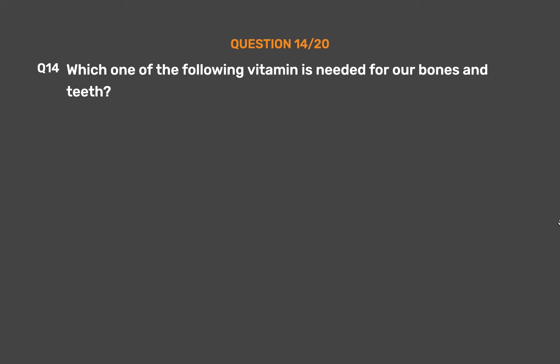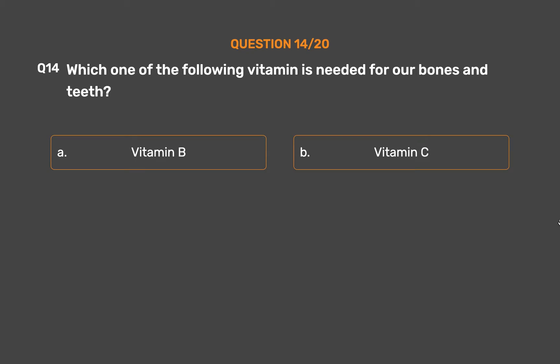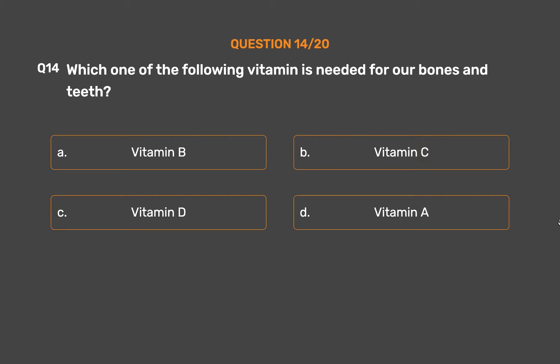Question number 14. Which one of the following vitamins is needed for our bones and teeth? Option A - Vitamin B, Option B - Vitamin C, Option C - Vitamin D, Option D - Vitamin A.